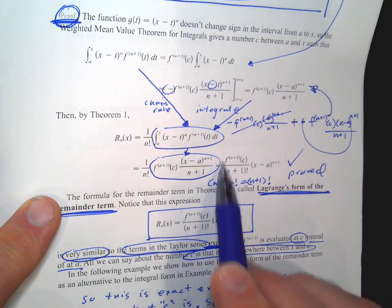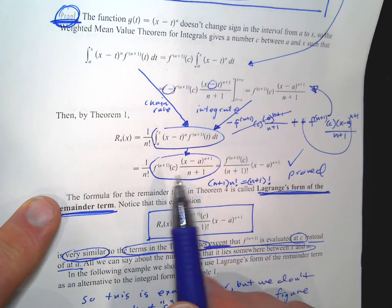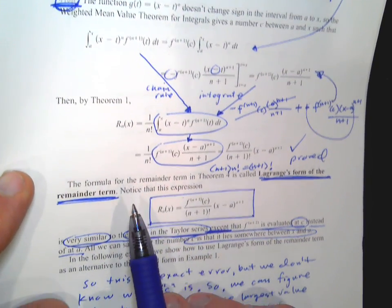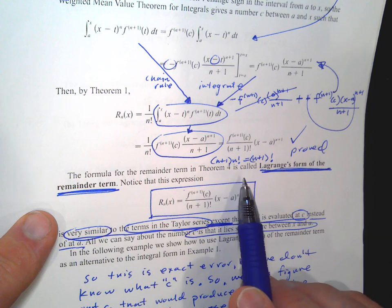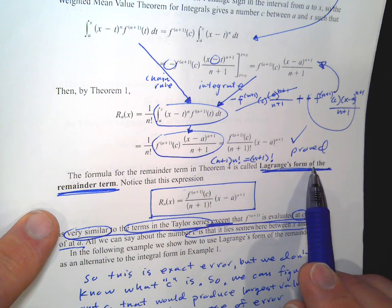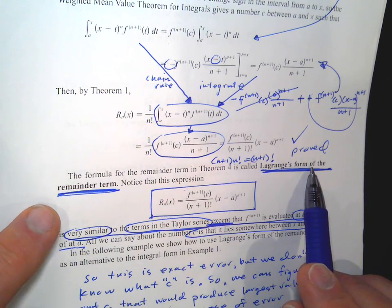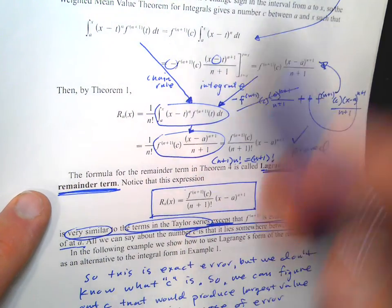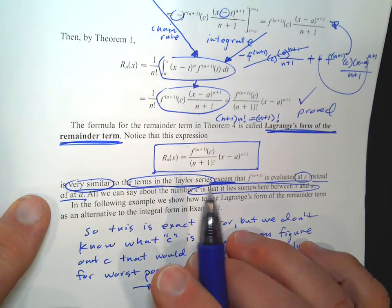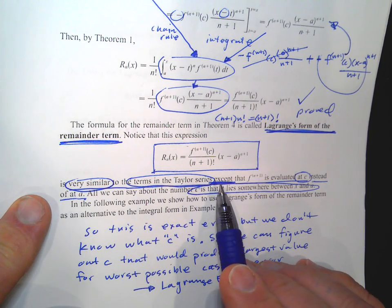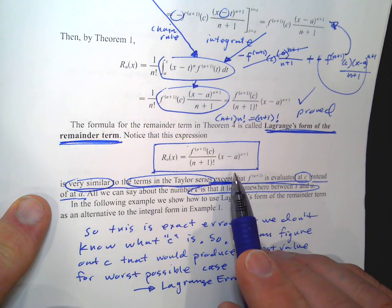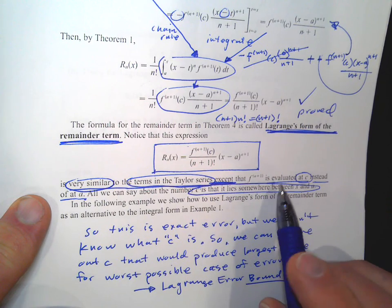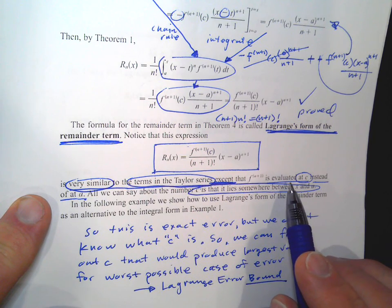Therefore this remainder theorem equals f to the n plus 1 of c times x minus a to the n plus 1 over n plus 1 factorial. The remainder is this. The formula for the remainder — Theorem 4 — is called Lagrange's form of the remainder term. This is Lagrange's form and this is how he got it. It's very similar to the terms in the Taylor series — it looks like the next term in the Taylor series, the n plus 1 term after the last term we've kept. That makes it kind of easier to remember.